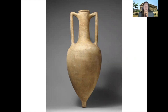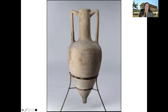Most amphoras were utilitarian courseware used as shipping containers. This example has no decoration at all and has a pointed base instead of a flat one. The shape is totally determined by its function — the pointed base allowed it to be stood up in sand and packed into the hold of a ship. The handles were for transportation, lashing into the cargo hold, and loading with a crane. You can see it standing in a metal tripod, which was just built by the museum.